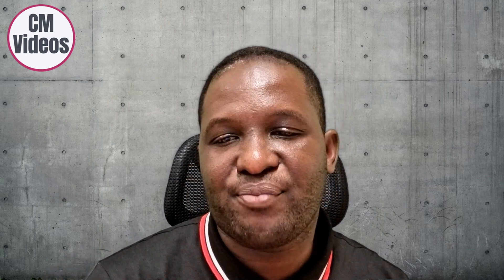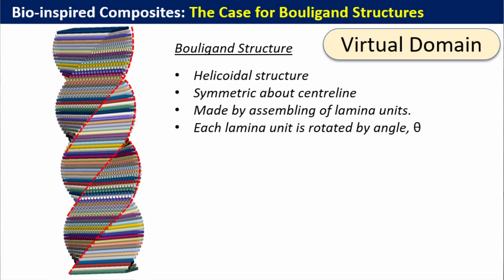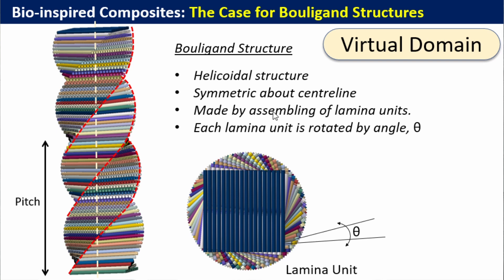The Bouligand structure is a helicoidal structure where the rotation around the central axis goes around a center line. It's made by assembling laminar units — each laminar unit is basically rotated by an angle theta relative to the previous one.